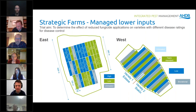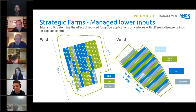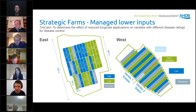Our strategic farms are focusing heavily on managed lower inputs, which ties into tonight's discussion. Two examples are shown — one in the east and one in the west — showing strategies being tried in their own fields. We're entering the growing season and the strategic farms will be implementing these over spring, communicating results over the summer, and publishing final results at harvest 2021, so watch this space.